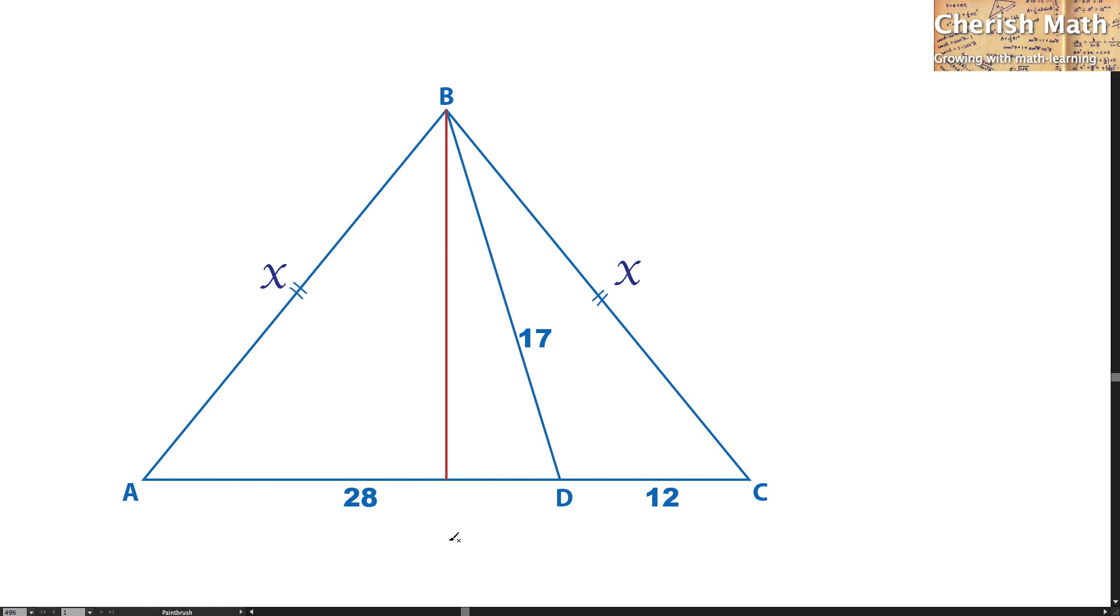Now by taking half of it, which is from the midpoint that I'm going to label as M to C, that will be 20. It is the same thing applied on A to M.